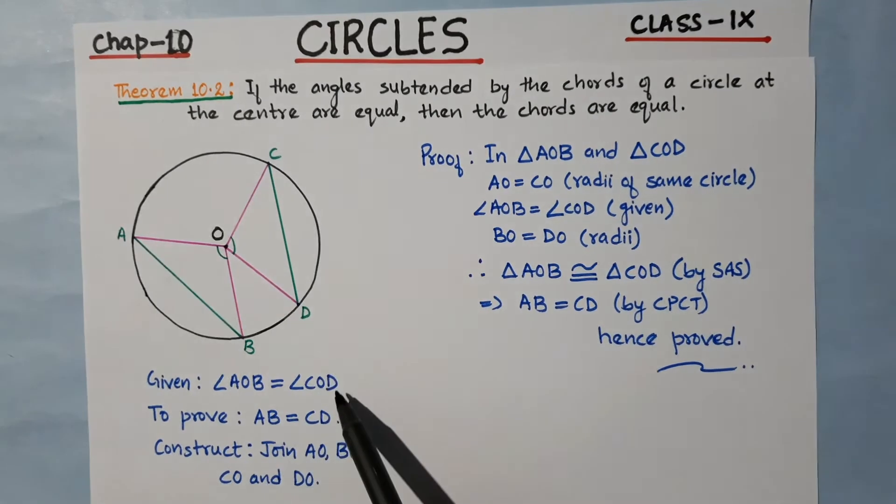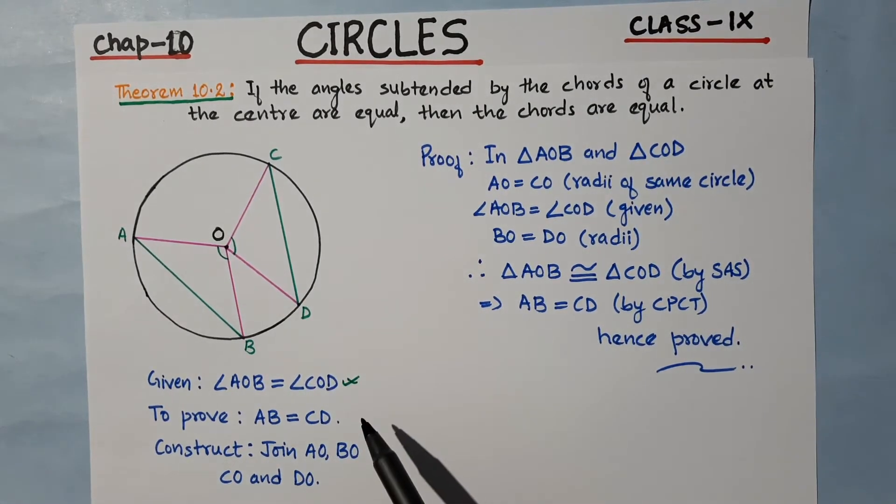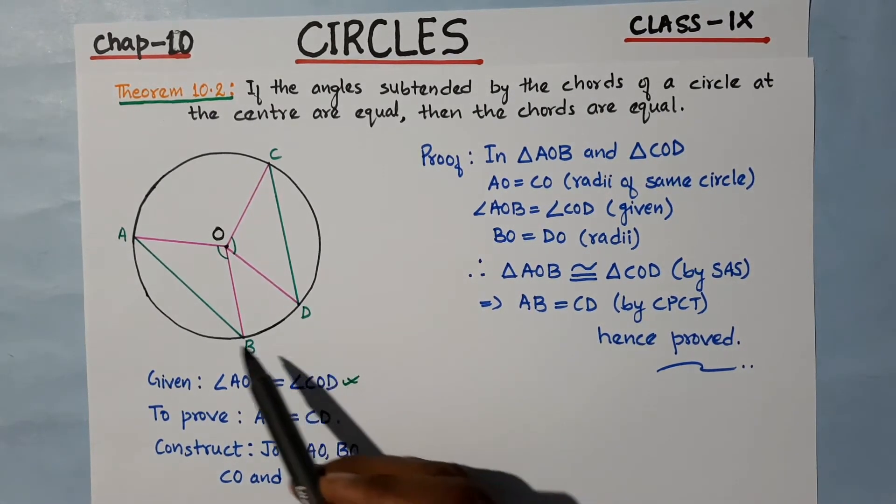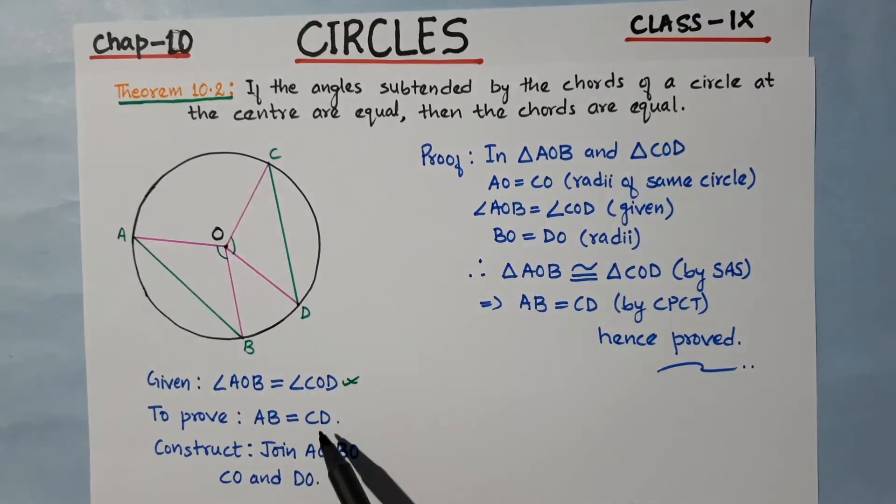Given: angle AOB = angle COD. To prove: AB = CD.